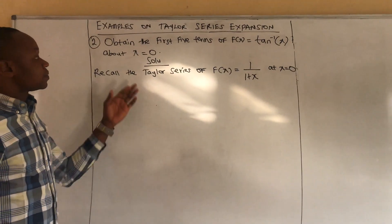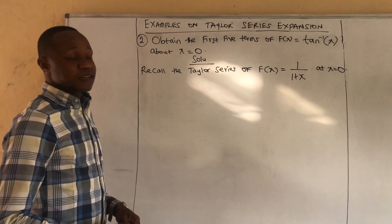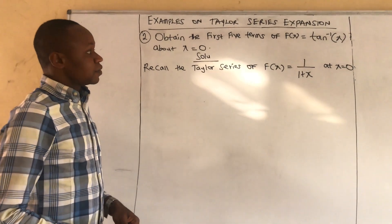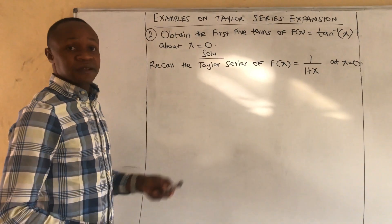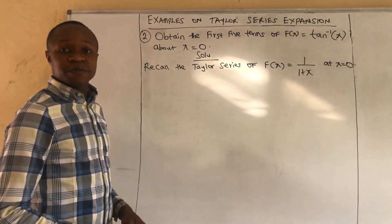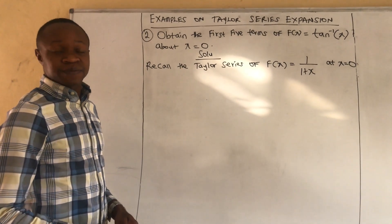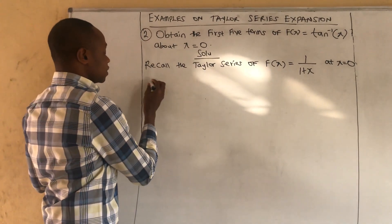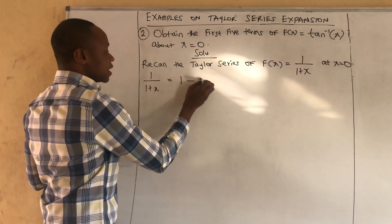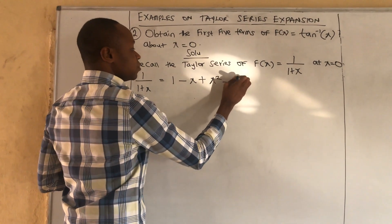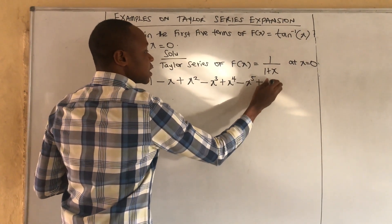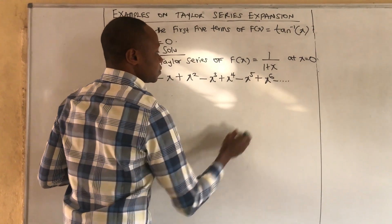We have the second example: obtain the first five terms of arctan x about x equal to 0. We will do this using knowledge from the last example. Recall we obtained the Taylor series expansion of 1 over 1 plus x at x equal to 0, which gave us 1 minus x plus x squared minus x cubed plus x to power 4 minus x to power 5 plus x to power 6 and other terms.